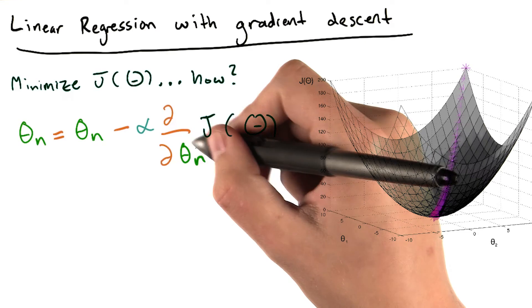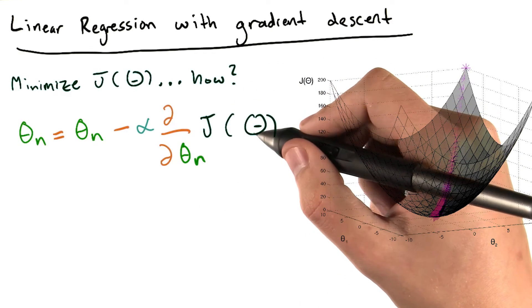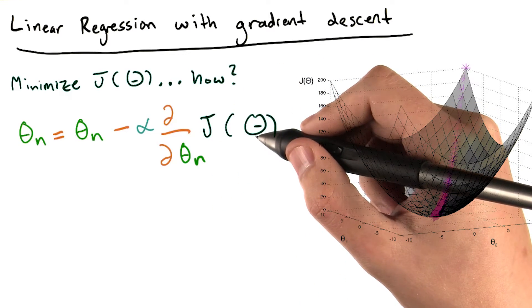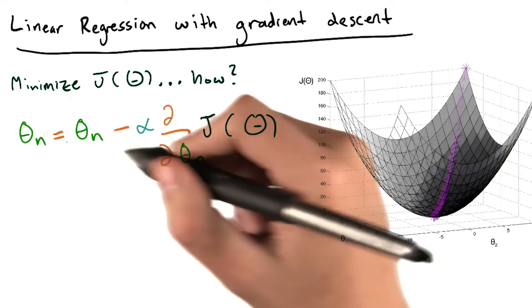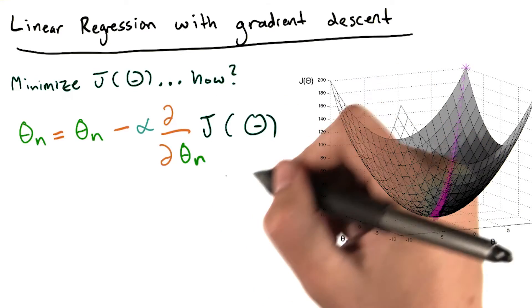So if we change this theta n a little bit, how much does J of big theta change? We simultaneously perform this update for every theta n in our big theta. That is, every single theta n in the entire set of thetas.